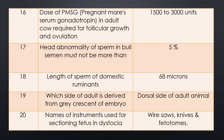Question 16. Dose of PMSG — Pregnant Mare's Serum Gonadotropin — in an adult cow required for follicular growth and ovulation. Answer: 1500 to 3000 units. Question 17. Head abnormality of sperm in bull semen must not be more than 5%.